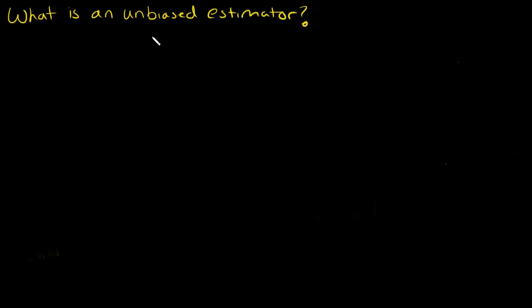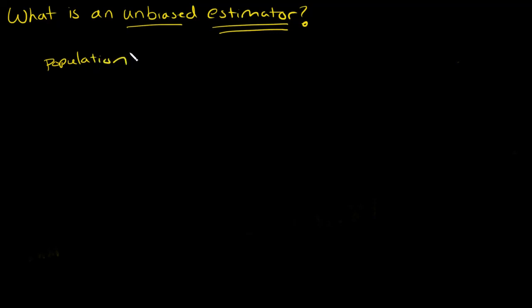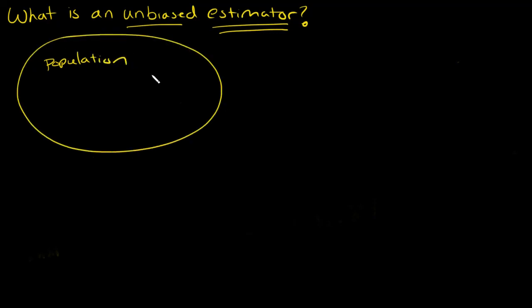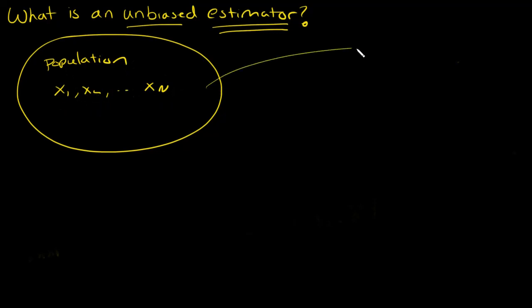Let's discuss what is an unbiased estimator, and I want to start with the term estimator. In statistics, we have this idea that there is a population out there. So there's a population, and we do not observe the population — that's key. There are x1, x2, up to x capital N items in the population, and we cannot observe them all. So what we do is we go out and we collect a sample.